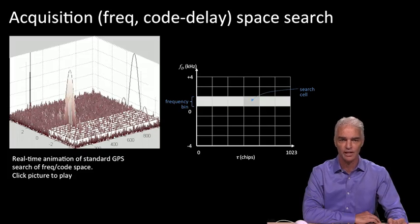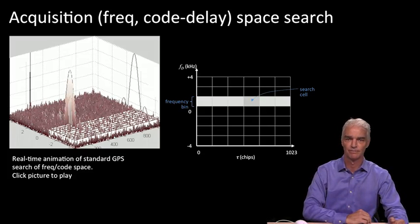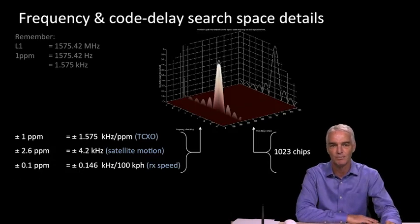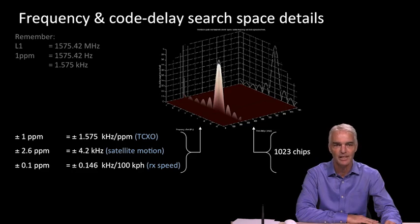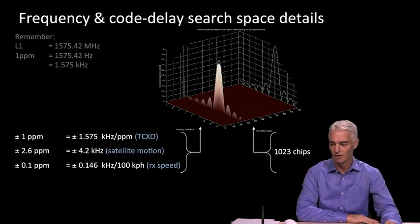Welcome to KGPS Live 1575. That's what your GPS receiver is doing. So now we can look at some details of this frequency code search space. For the rest of this video, we'll see how we get these particular numbers — a quantified value for how much frequency offset we have on one axis and how much code offset on the other.